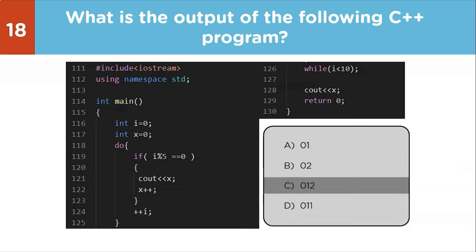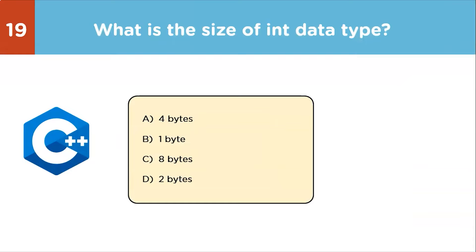Multiple choice question: what is the size of the integer data type? Options are 4 bytes, 1 byte, 8 bytes, and 2 bytes. The correct answer is 4 bytes — that is the size of the integer data type.